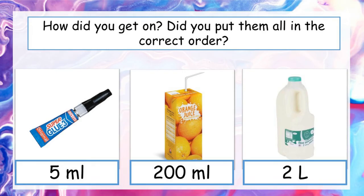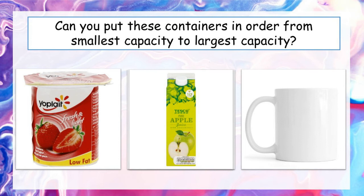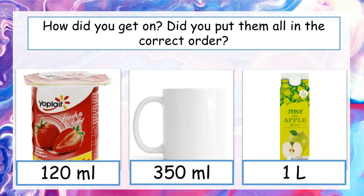Let's try one more of those. Put them in order from the smallest capacity to the largest. We have a yoghurt tub, a large carton of apple juice, and a mug. Pause the video and put them in the correct order. The smallest container is the yoghurt pot — around 120 millilitres. The middle container is the mug — 350 millilitres. And the largest container is the apple juice carton with 1 litre. You wouldn't be able to fit a full carton of apple juice into one mug, so it must be smaller.